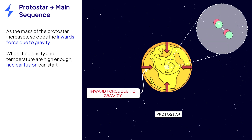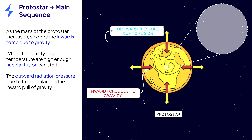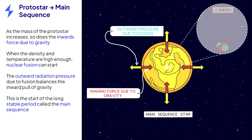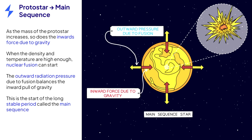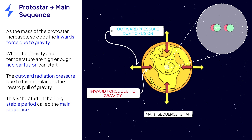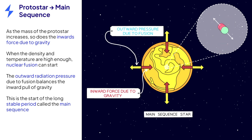The high temperatures created by fusion produce an outward radiation pressure, which exactly matches the inwards gravitational forces. This stage in the star's life cycle is called the main sequence. Once this happens, the star enters a long period of stability, as it continues to fuse hydrogen into helium for billions of years.